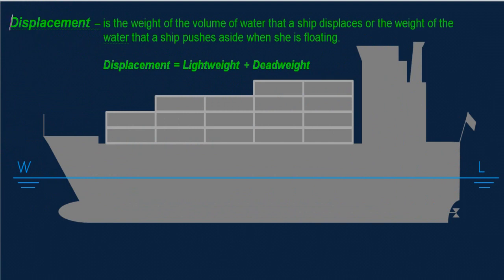Displacement is the weight of the volume of water that a ship displaces, or the weight of the water that the ship pushes aside when she is floating. From our science subject, we know that when you put an object into a glass full of water, the water will displace. The weight of that displaced water is equivalent to the weight of the object placed in the glass.